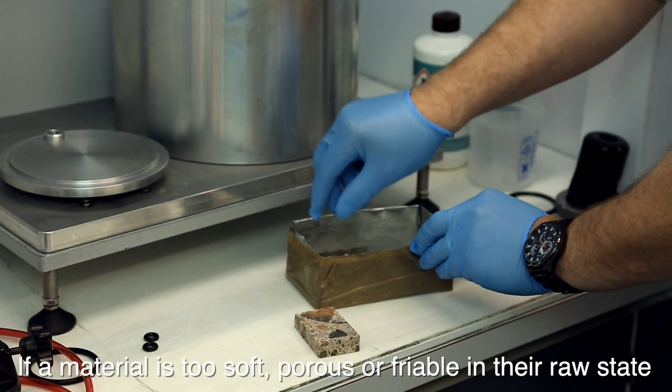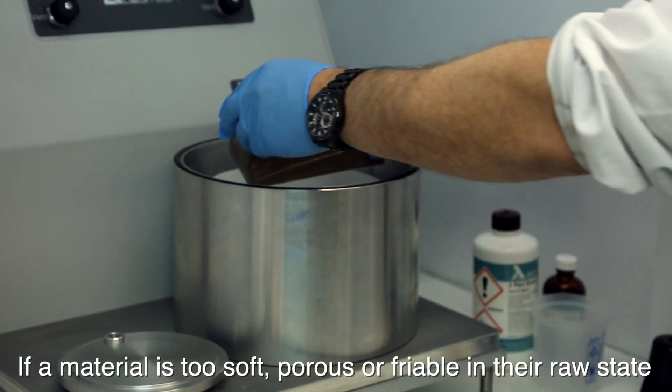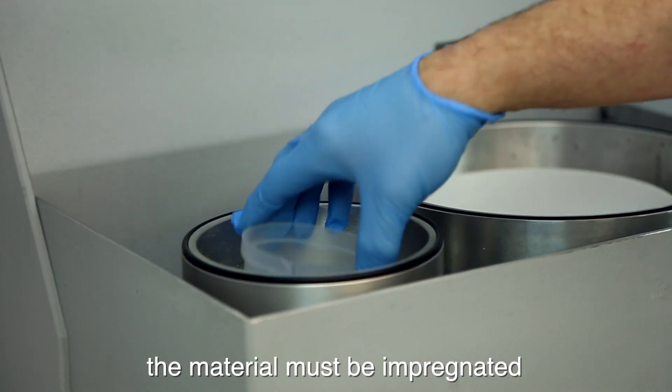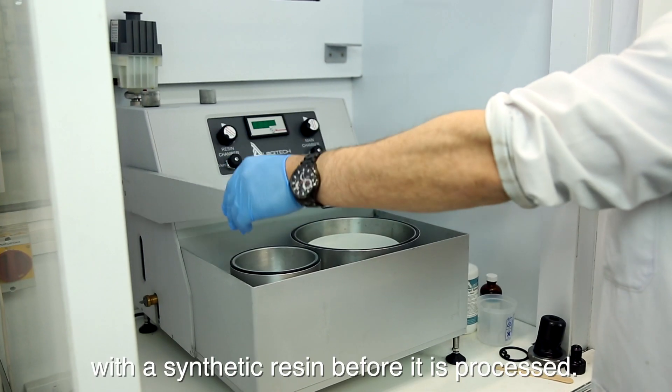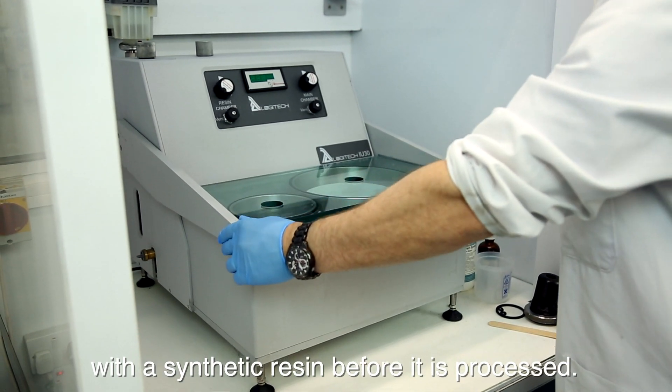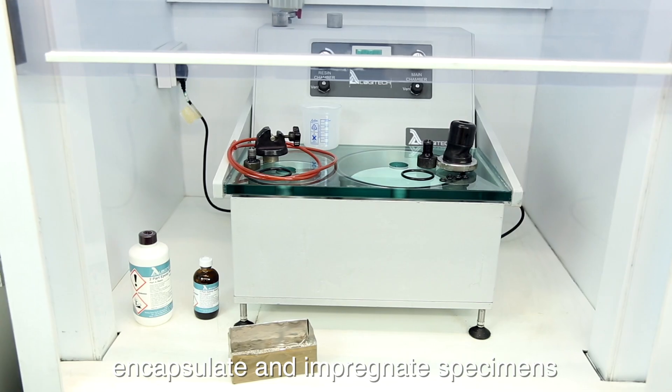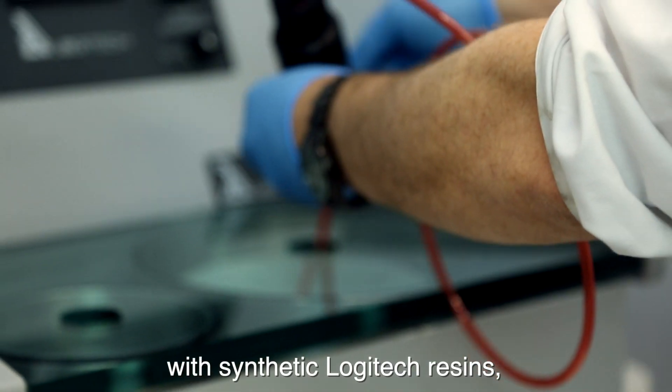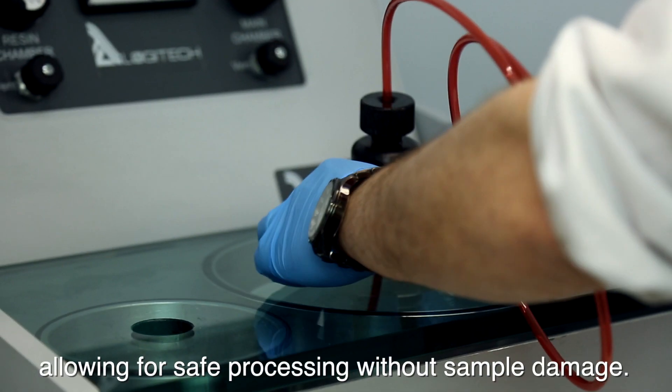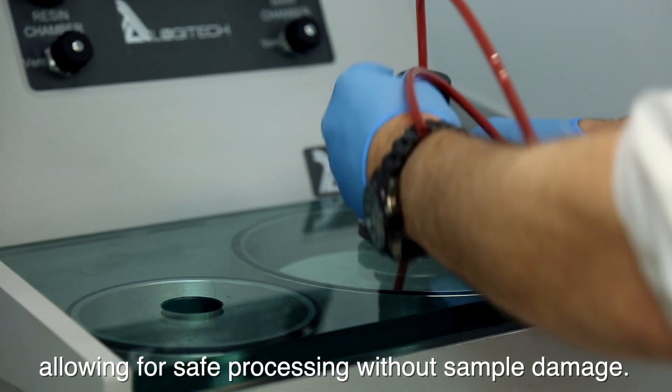If a material is too soft, porous or friable in their raw state, the material must be impregnated with a synthetic resin before it is processed. The Logitech IU30 impregnation unit is designed to encapsulate and impregnate specimens with synthetic Logitech resins, allowing for safe processing without sample damage.